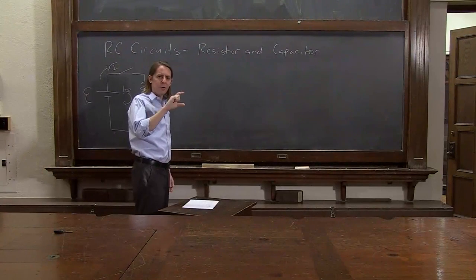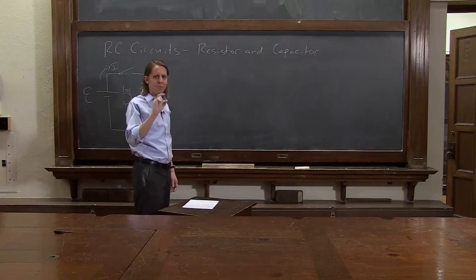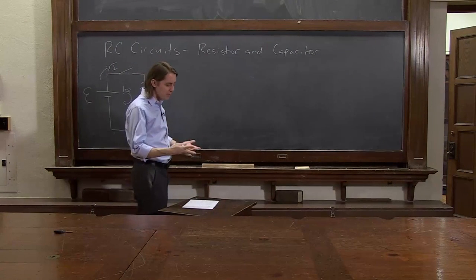OK, so if you have the natural log of A minus the natural log of B, that's the natural log of A over B.